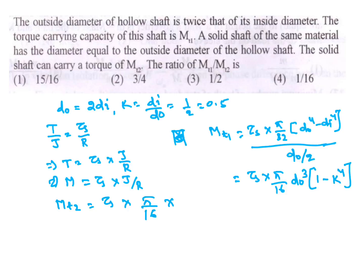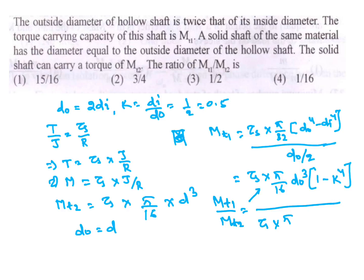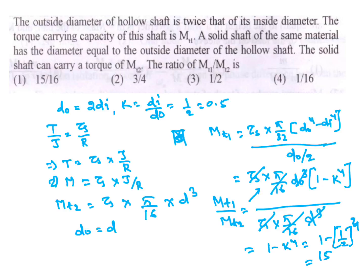For the solid shaft: MT2 = tau_s × (pi/16) × DO^3. Since DO equals the solid shaft diameter d, the ratio MT1/MT2 = (1 - k^4) = 1 - (1/2)^4 = 1 - 1/16 = 15/16. So the answer is 15/16.